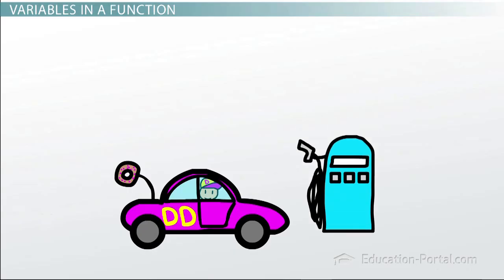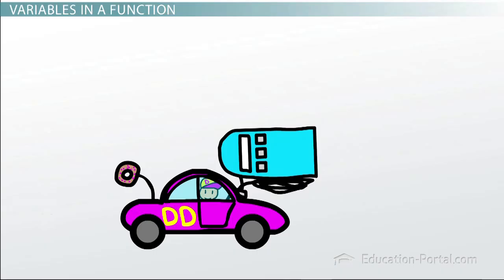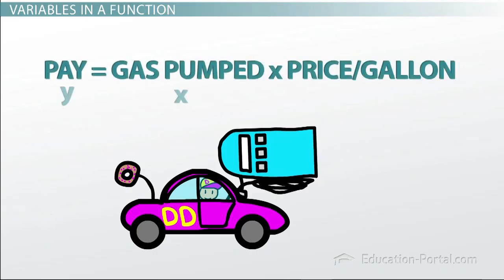So in the case of our gas station, we really know what the function is. So we go to the gas station, and we pump some amount of gas. Because you've probably gone to the gas station before, you know that the number of dollars that you're going to pay is equal to the amount of gas that you pumped times the price per gallon.